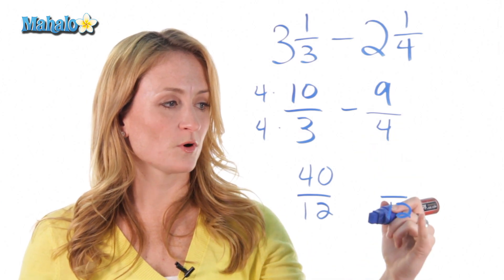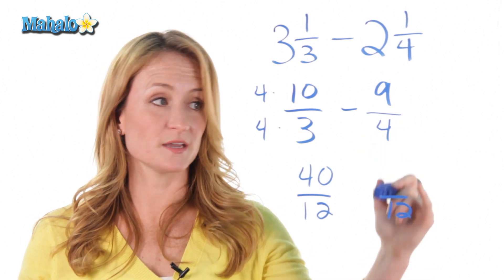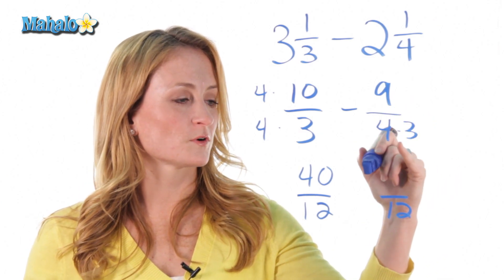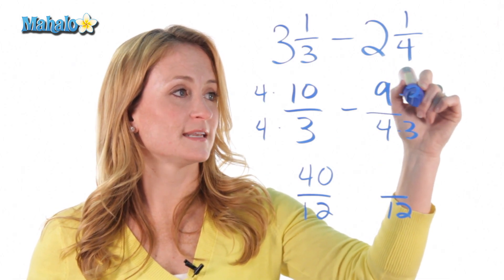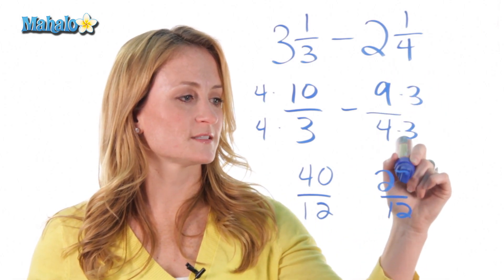What did we do over here? How did this 4 become a 12? Well, we multiplied it by 3. 4 times 3 is 12, and 9 times 3 is 27.